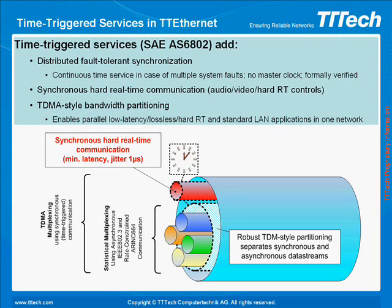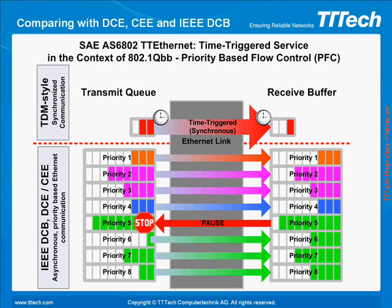Lower priority asynchronous traffic is robustly separated from time-triggered traffic. The important aspect of synchronous time-triggered communication is that it is subject to different rules than asynchronous communication. In asynchronous communication, it is assumed that the network load cannot be predicted. In a synchronous world, resource use and message arrival is known and predictable.